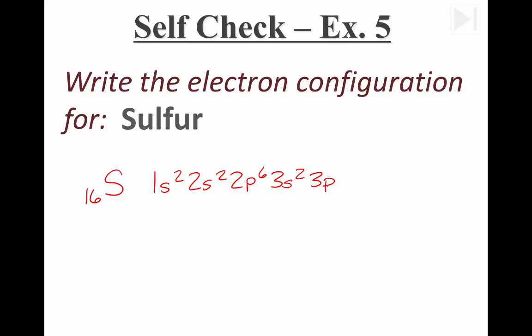And in the 3p, I will not need to fill up this sublevel. I only need four more electrons to make 16. Again, if we add up all of these numbers up here, we'll find out that they make 16. We have correctly represented the electrons in a sulfur atom.